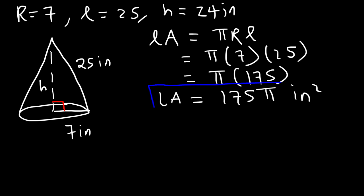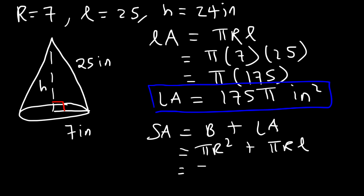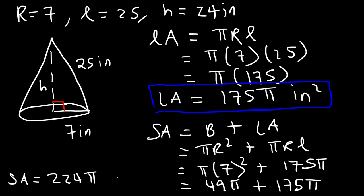Now let's calculate the surface area: area of the base plus the lateral area, which is π r² + π r l. R is 7, and we know π r l is 175π. 7 squared is 49, so we add 49π to 175π. 175 plus 49 is 224, so the surface area is 224π square inches.